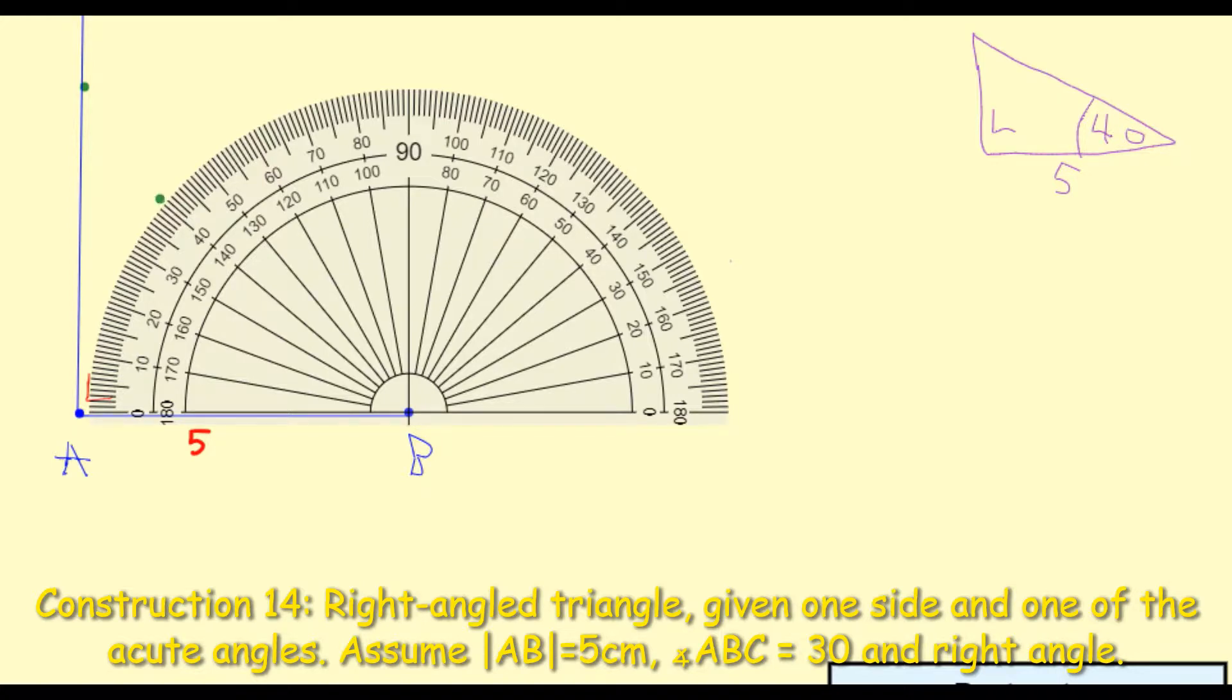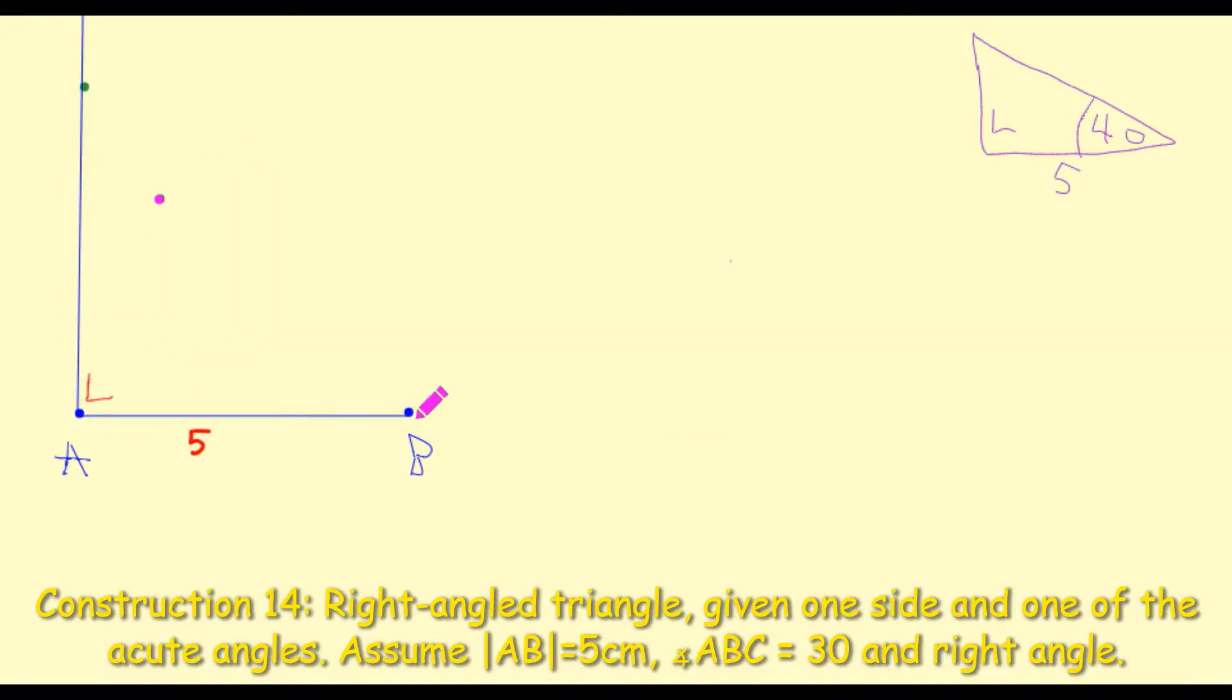Let's just change our color here. What I'm going to do is with my ruler now, I'm going to connect the point B to this perpendicular line, passing through this pink dot.